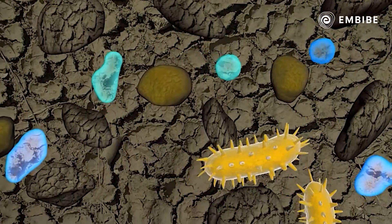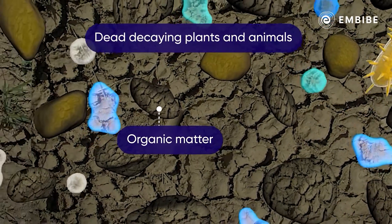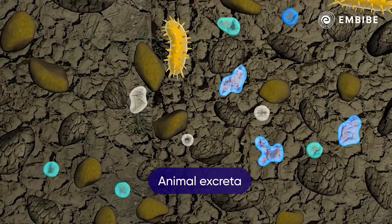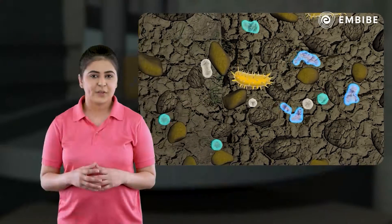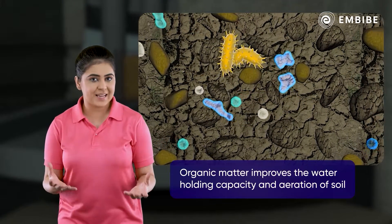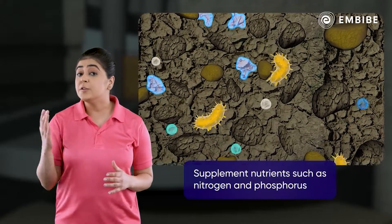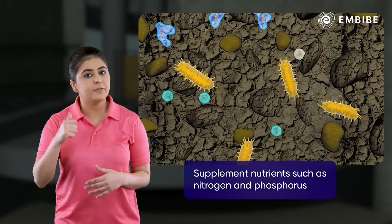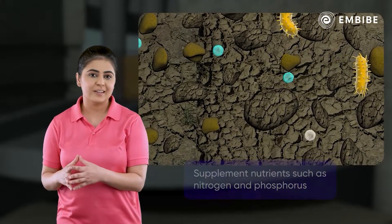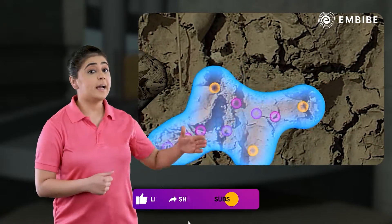Another important constituent of soil is organic matter, which comes from dead, decaying plants and animals, and also animal excretion. The organic matter improves the water holding capacity and aeration of the soil, and supplements nutrients such as nitrogen and phosphorus to help plant growth.